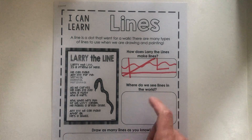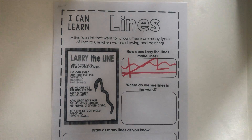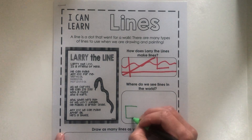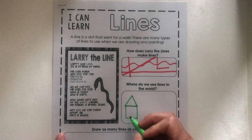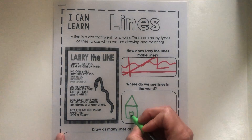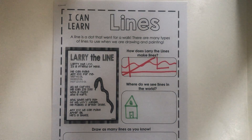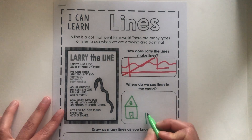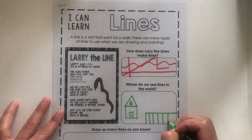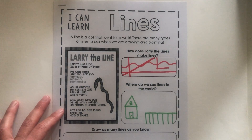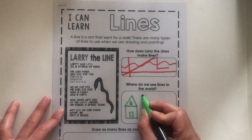The next box says where do we see lines in the world? You can write words in this box or you can draw pictures. I know I see lines on my house — I'm going to draw a house with two shapes, a square and a triangle. I also see lines when I'm looking at the fence outside. I have a fence right up at my window right now and I see lots of lines on that fence. I also see lines in my art room with the pictures hanging on the wall.